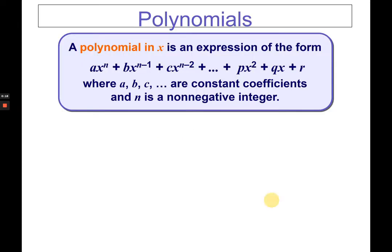Let's have our review of basic concepts. A polynomial in x is an expression where a, b, c are constant coefficients and n is a non-negative integer — the power is not negative. The coefficients range from the highest exponent down to the constant.